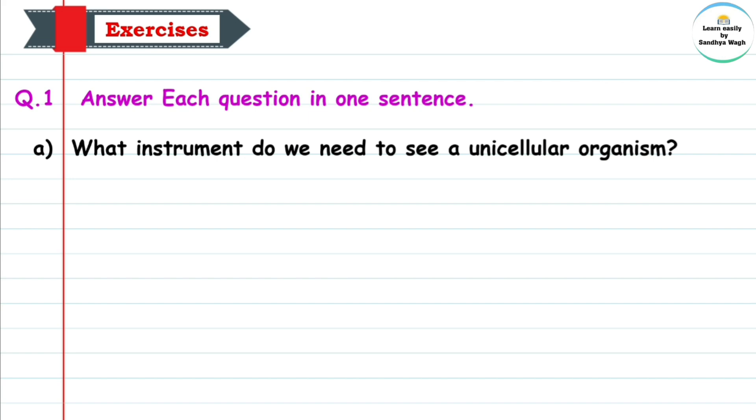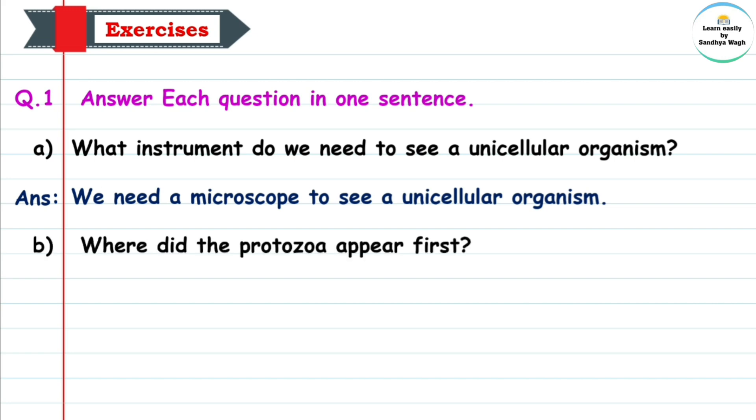Answer: We need a microscope to see a unicellular organism. Part b: Where did the protozoa appear first? Answer: The protozoa appeared first in water.